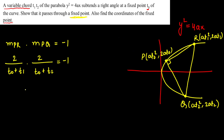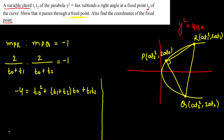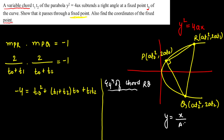Simplifying, we get −4 = (t0 + t1)(t0 + t2), which expands to t0² + t0(t1 + t2) + t1t2. So t1t2 = −4 − t0² − t0(t1 + t2). Next, I'll calculate the equation of chord RQ. The chord joining t1 and t2 can be written as y = x / AM(t1, t2) + a × GM(t1,t2)² / AM(t1,t2), where AM = (t1+t2)/2.